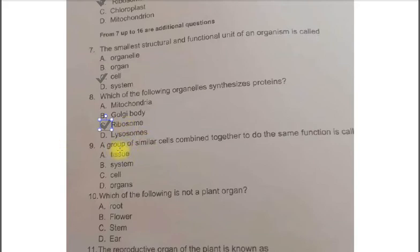Next question. A group of similar cells combined together to do the same function is called. A. Tissue. B. System. C. Cell. D. Organ. The correct answer is A. Tissue.